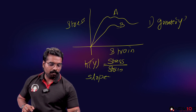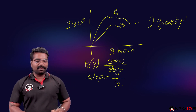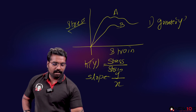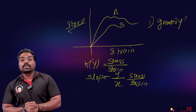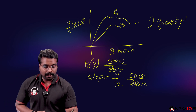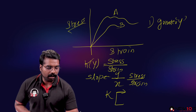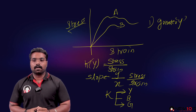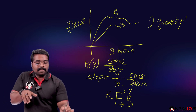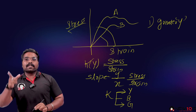The slope is the y-axis divided by x-axis. Stress is the y-axis and strain is the x-axis, so stress divided by strain gives us the slope. The slope corresponds to Young's modulus, bulk modulus, or shear modulus depending on the context.